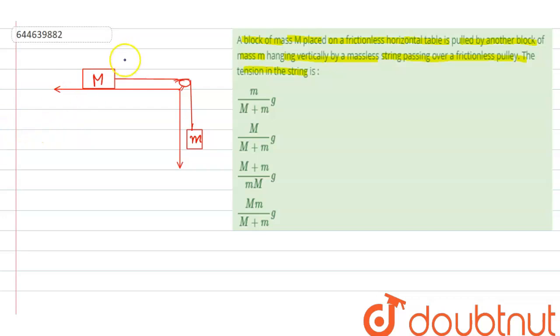So let us suppose we draw the free body diagram. Here, the weight Mg acts. Tension is towards right and the normal reaction is perpendicular to surface. So if we determine the net force on a body of mass capital M, that is this one. So it is tension. And force is Ma. So tension equals Ma. This is first equation.